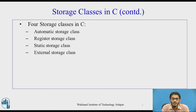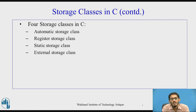There are four storage classes in C language. The first is the automatic storage class, using the keyword auto. The second is the register storage class, using the keyword register. The third is the static storage class, using the keyword static. And the fourth is the external storage class, using the keyword extern. All these keywords are in lowercase in C language.